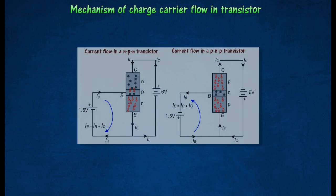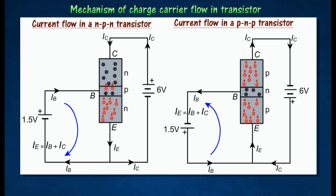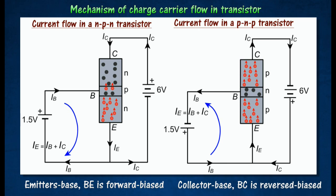The following diagram shows the mechanism of charge carrier flow in transistor. When the transistors are connected this way, the emitter base B is forward biased and the collector base BC is reverse biased.